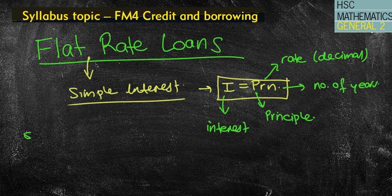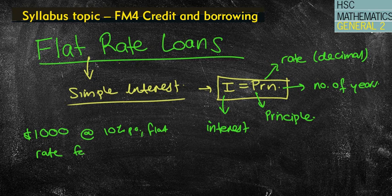So for example, let's say we're going to borrow $1,000 at 10% per annum. We've been told that it's at a flat rate for, let's say, 5 years. So what does that actually mean? Well, hopefully you remember that flat rate or simple interest means that we are going to be charged the interest rate on the initial amount.